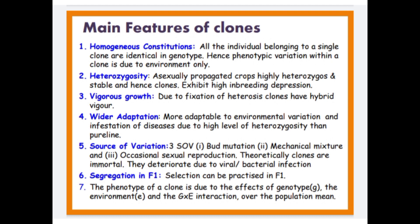2. Heterozygosity — asexually propagated crops are highly heterozygous and stable, and hence clones exhibit high inbreeding depression. 3. Vigorous growth. 4. Due to fixation of heterozygosity, clones have hybrid vigour. 4. Wider adaptation — more adaptable to environmental variation and infestation of disease due to high level of heterozygosity than pure lines.